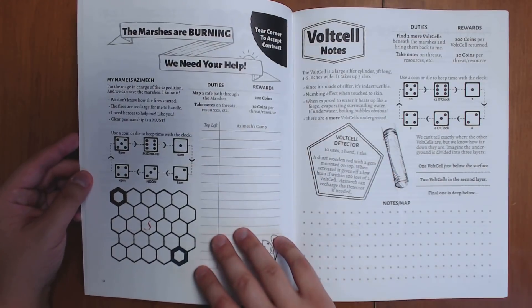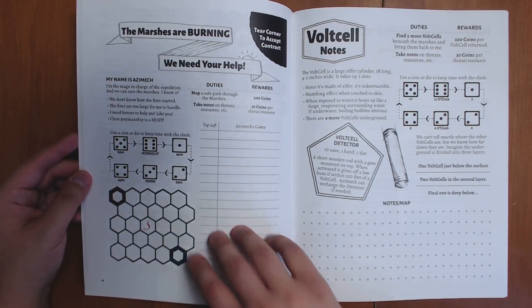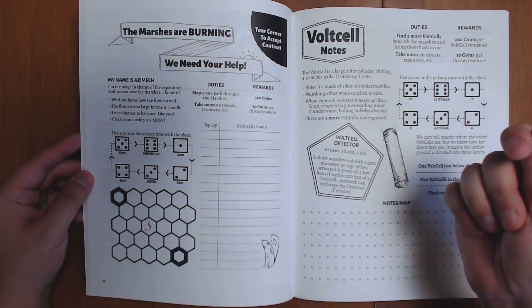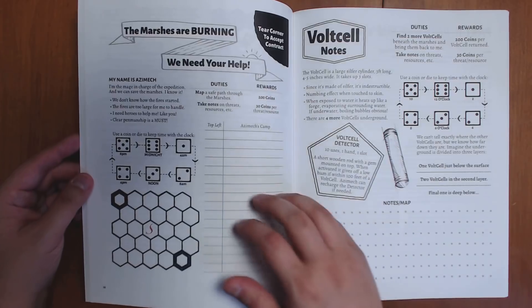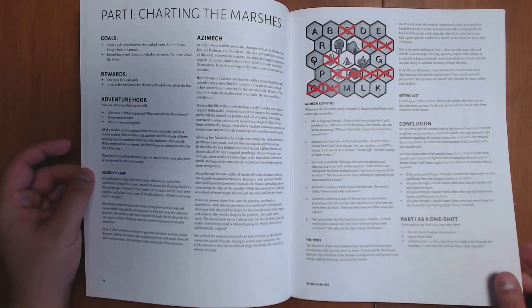This is a flyer that can get handed out to you. You can actually print this out and give it to the players as something that they find in a town or tacked to a tree, so that they have the flyer that Azamek is giving to new adventurers.